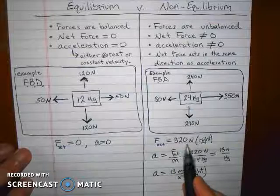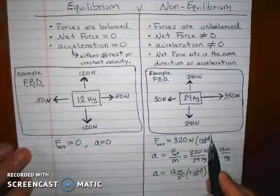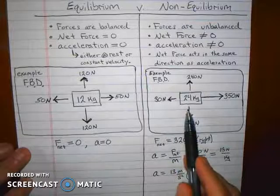And the difference of those two forces, 350 to the right minus 30 to the left, gives you a 320 newton net force acting to the right. So this object has a net force pushing it to the right. Therefore, it has a net acceleration to the right. And to determine that net acceleration, apply Newton's second law.